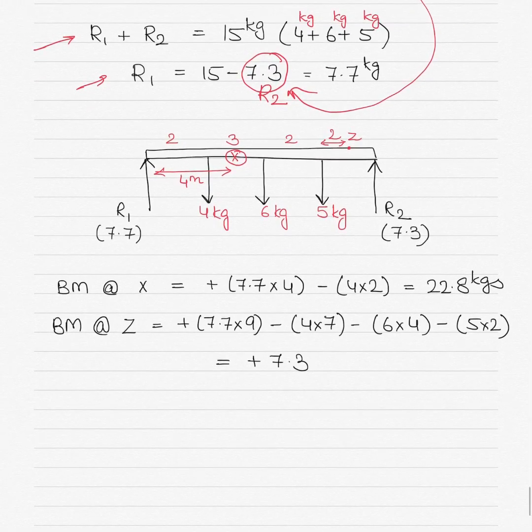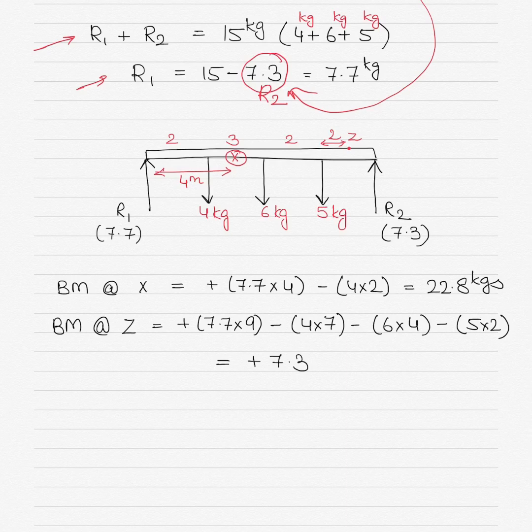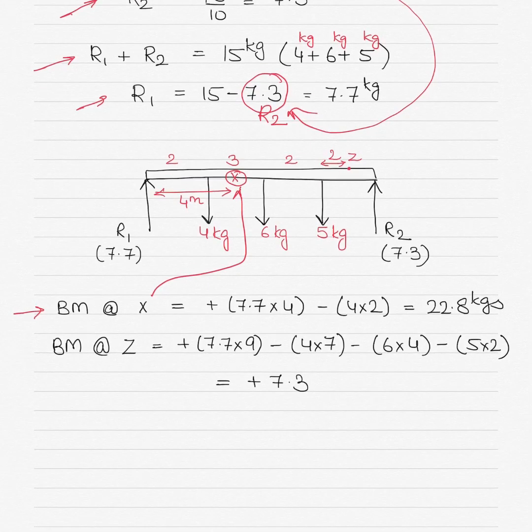If I put in the values of R1 and R2 as 7.7 and 7.3 in the above diagram, you can see the bending moment at X will be equal to 7.7×4 - 4×2. One is positive because it is acting clockwise and the other one is acting anti-clockwise. 7.7×4 is acting upwards and 4 is acting downwards, so the bending moment at X will be 7.7×4 - 4×2.